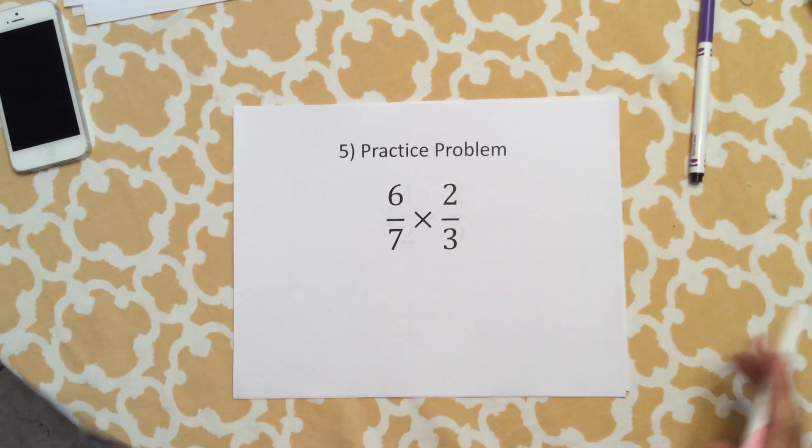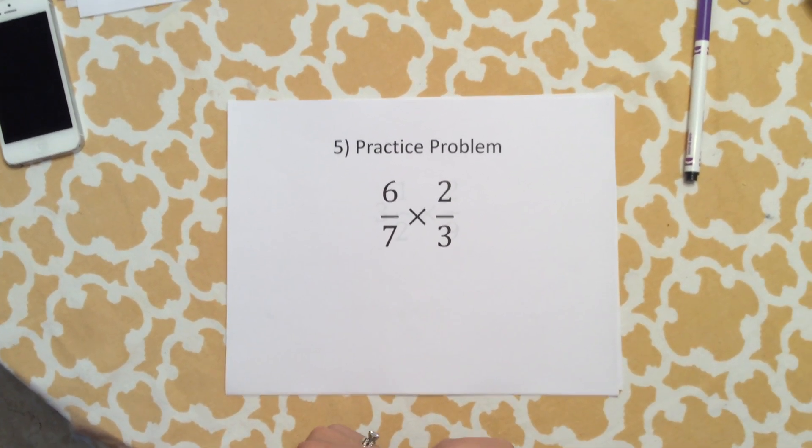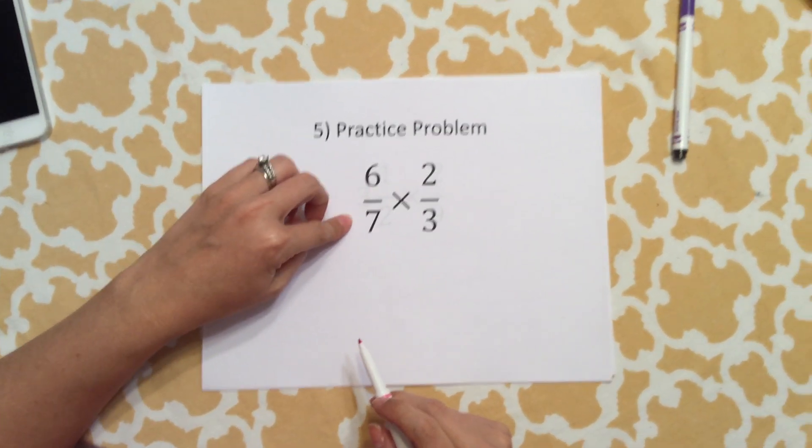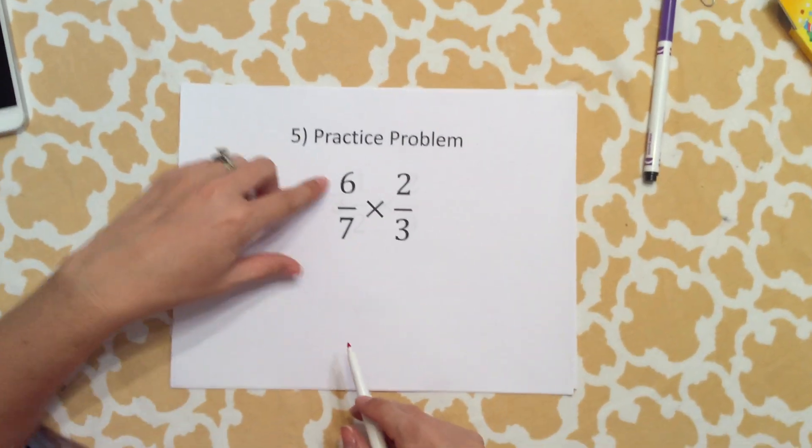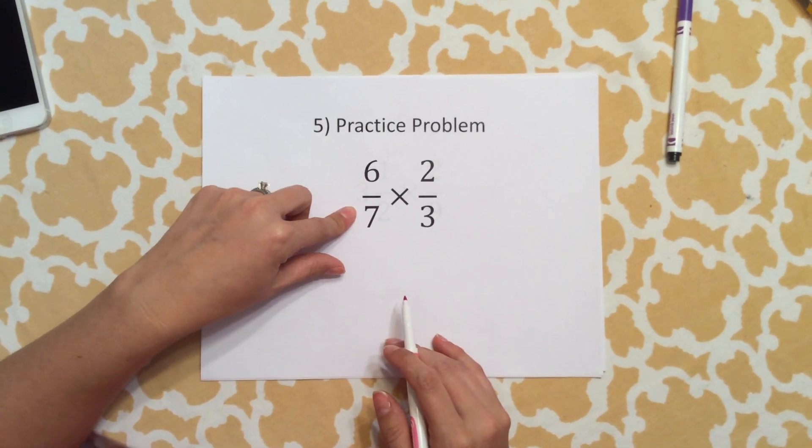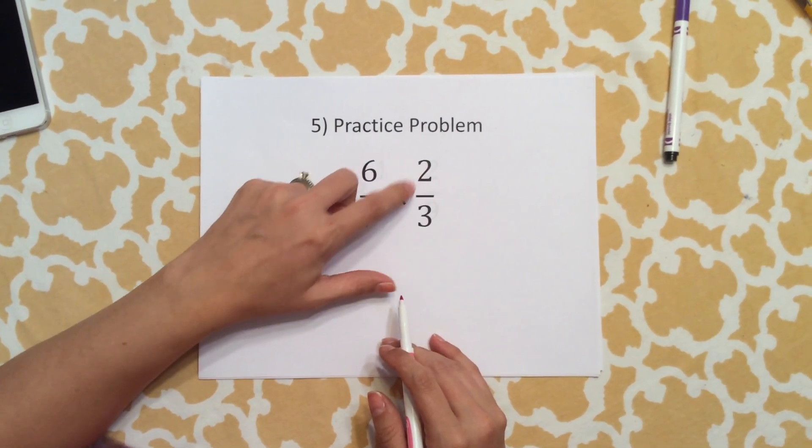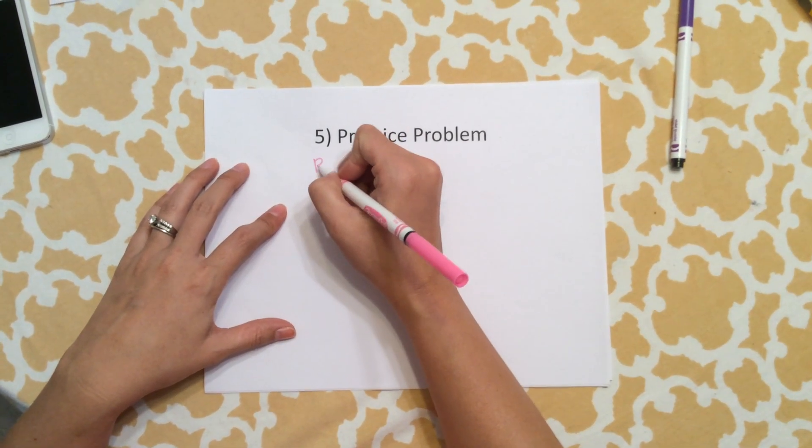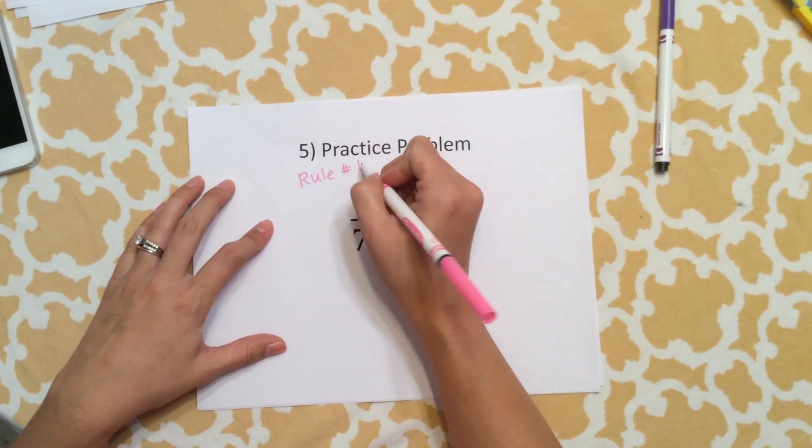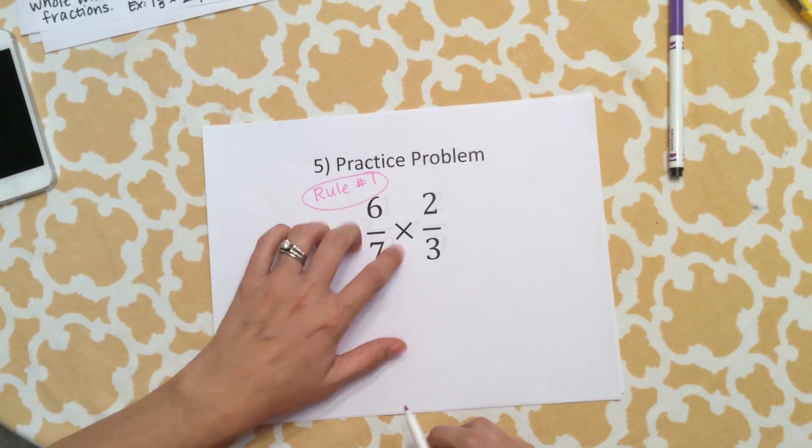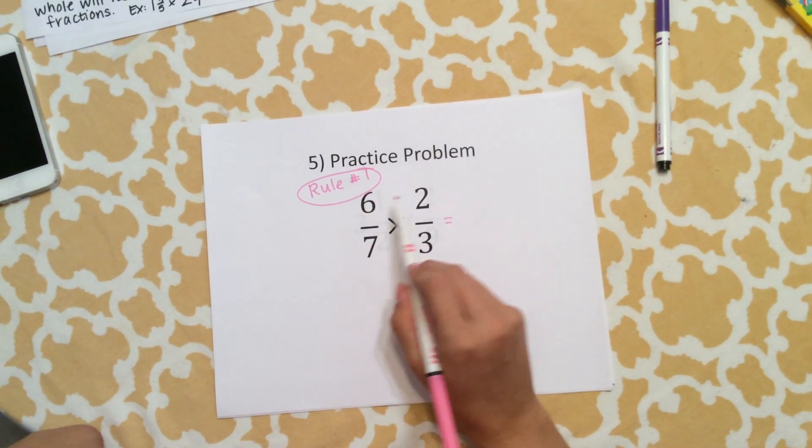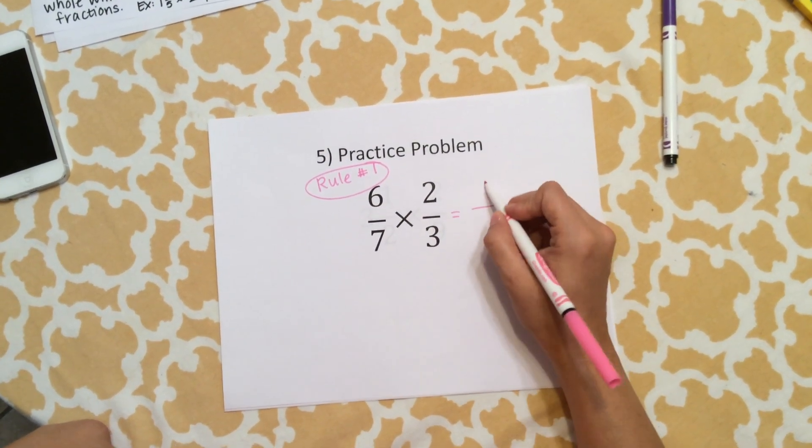Our first practice problem: what I want you to do is write which rule applies with this, so one, two, or three. We have 6/7 times 2/3. I know that 6/7 is not quite one whole and 2/3 is not quite one whole, so our answer will go with rule number one. It will be less than both of these numbers, and we're going to multiply them out just straight across. 6 times 2 is 12, 7 times 3 is 21.